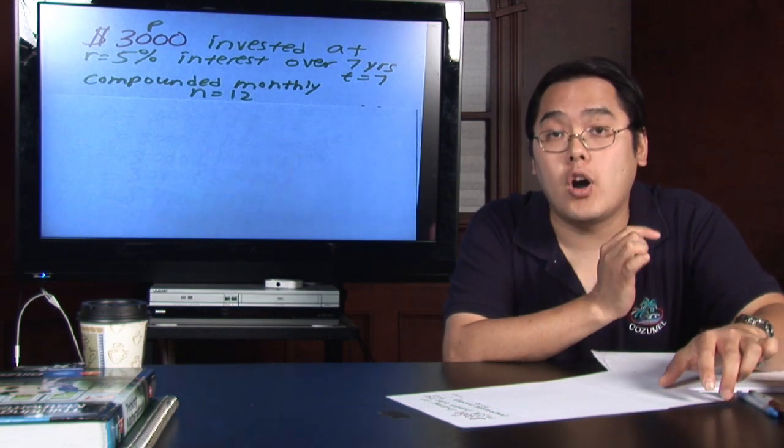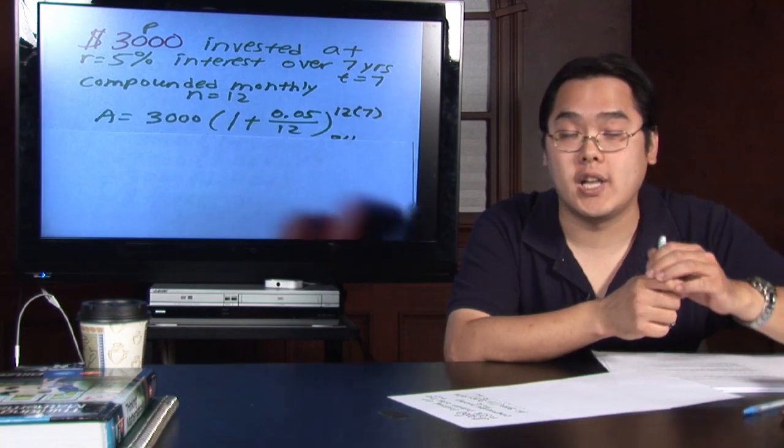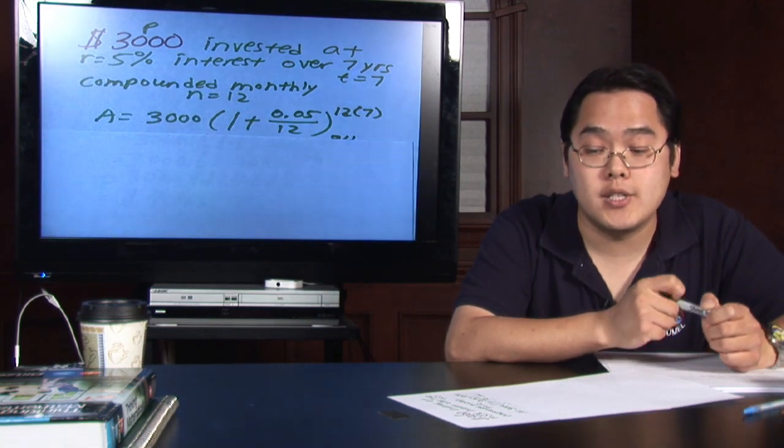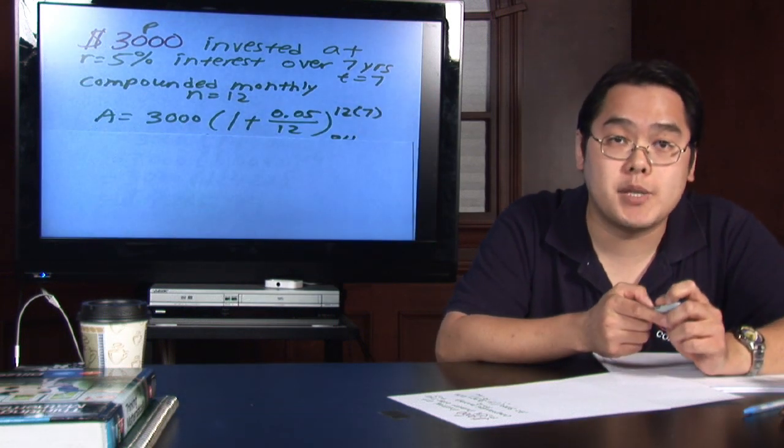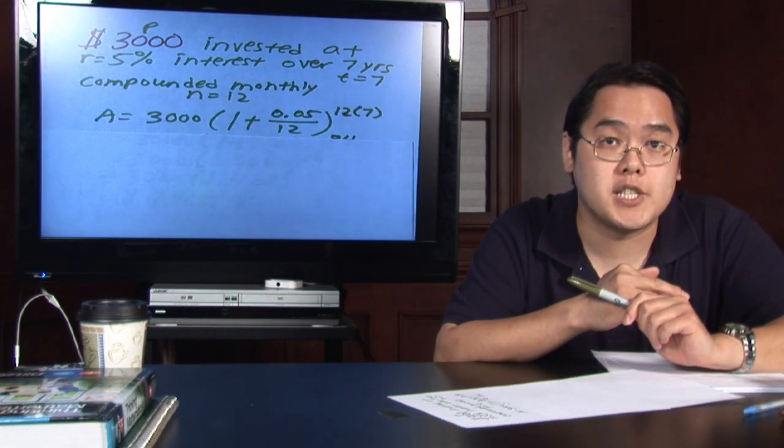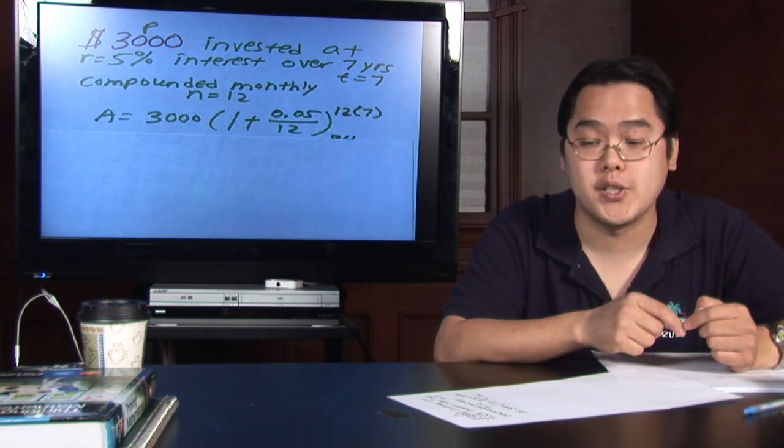When you plug all those things in, this is what the first line should look like. P is 3,000, N is 12. Notice the two places that N is going to be. When you express a percentage, be sure to shift the decimal two places, so 5% should really be 0.05.